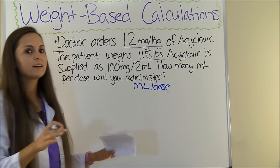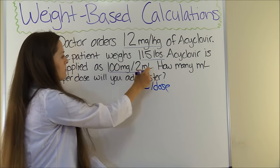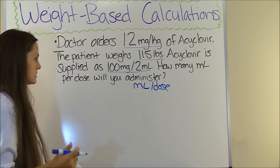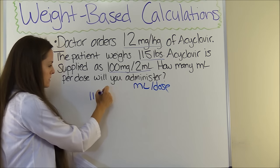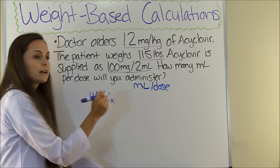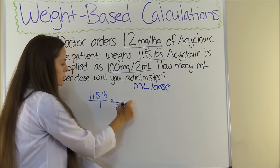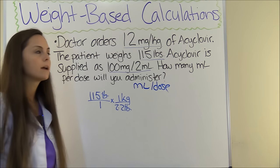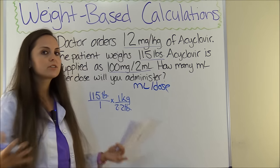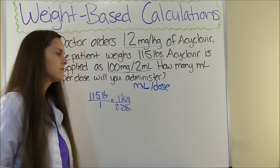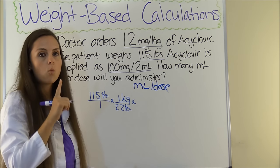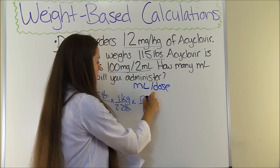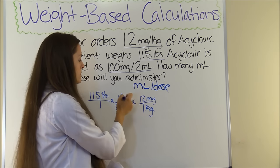When I set up my dimensional analysis problems, I like to put what my goal is. The very first thing we want to do is convert our patient's weight from pounds to kilograms. So 115 pounds — we know that there are 2.2 pounds in one kilogram. We've canceled our pounds out and we're in kilograms. Now we want to see how many milligrams we're actually going to give this patient based on how much they weigh. From the order, we know that 1 kilogram equals 12 milligrams, so kilograms cancels out and we're in milligrams.